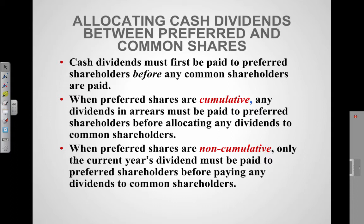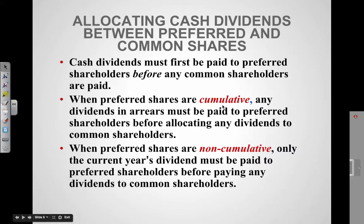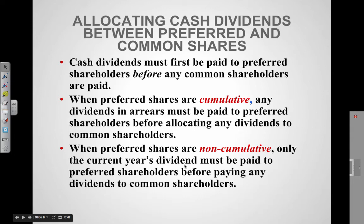Now let's talk about preferred shareholders and common shareholders. Cash dividends must first be paid to preferred shareholders before any common shareholders are paid. If there's enough money to go around, everyone could benefit. However, if there's only enough to pay the preferred shareholders, then the common shareholders will get nothing. If the preferred shares are cumulative, any dividends in arrears — meaning dividends not paid last year — must be paid to the preferred shareholders before allocating any dividend to the common shareholders. When preferred shares are non-cumulative, only the current year dividend must be paid to preferred shareholders first.